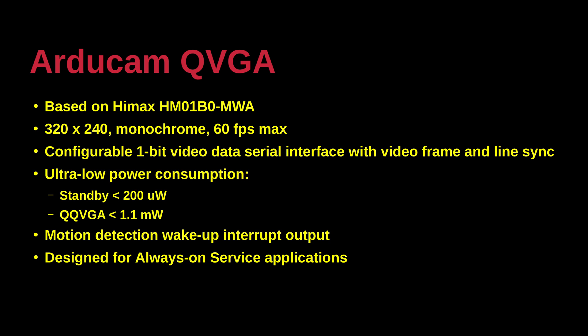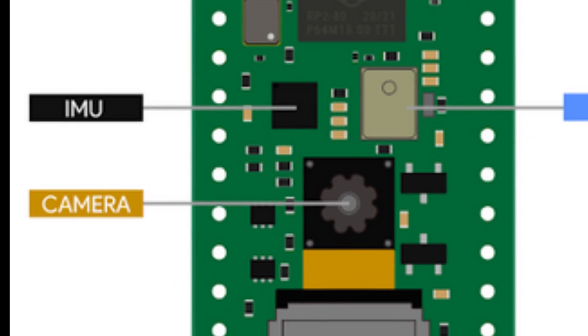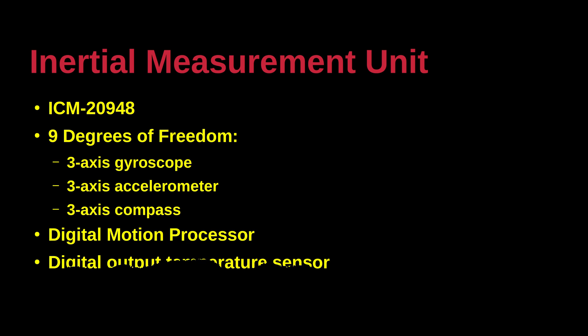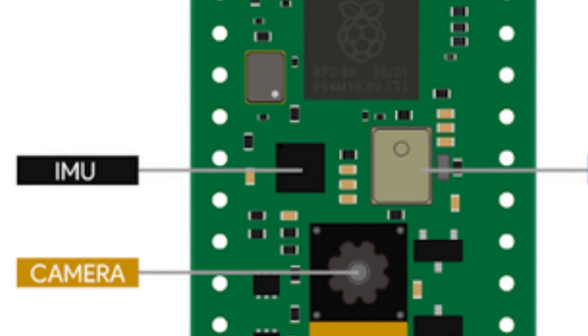Motion detection wake-up interrupt output is available and the camera is designed for always-on service applications. The inertial measurement unit is based on the ICM 2948 chip. There are 9 degrees of freedom: 3 axes for the gyroscope, 3 for the accelerometer, and 3 for the compass. There is also a digital motion processor and a digital output temperature sensor.